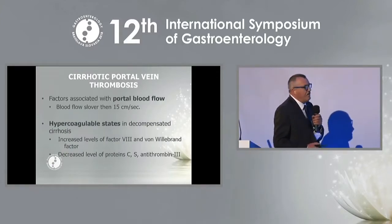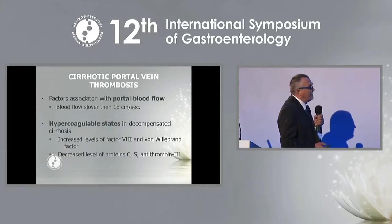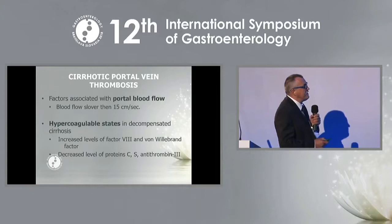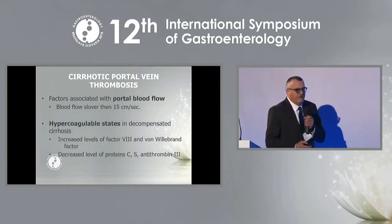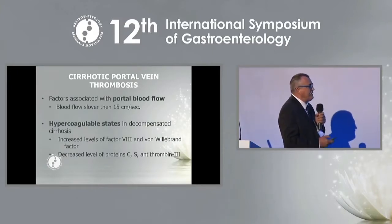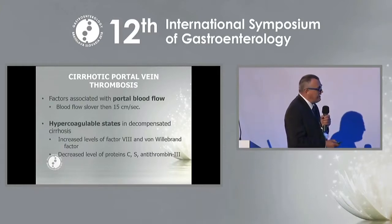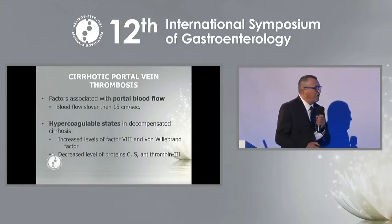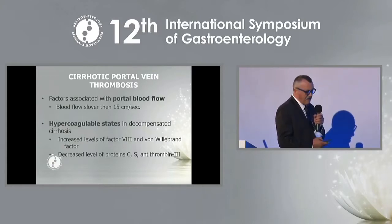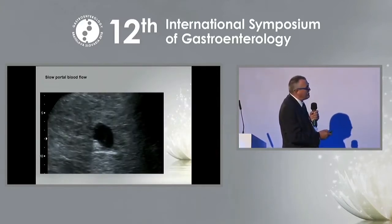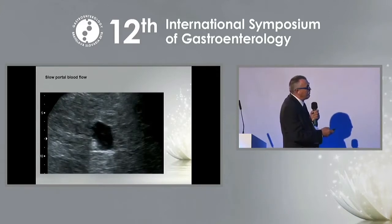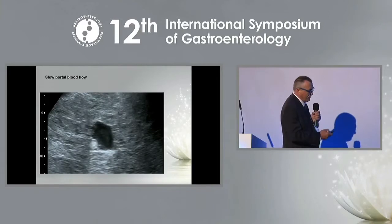There are several factors associated with portal vein thrombosis. In chronic liver diseases, blood flow in the portal vein becomes very slow — lower than 15 centimeters per second. We also see hypercoagulable states, with increased levels of coagulation factor 8 and von Willebrand factor, and decreased synthesis of protein C, S, and antithrombin 3. In this sample, you can see that portal blood flow is very low, with turbulence visible in the left branch of the portal vein.